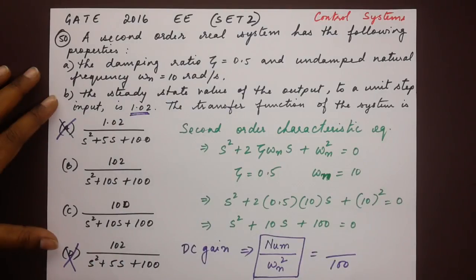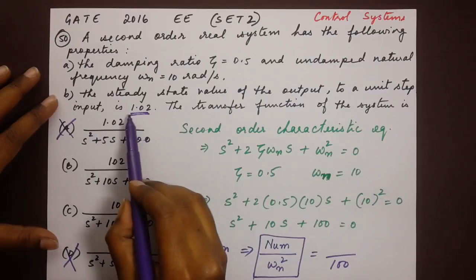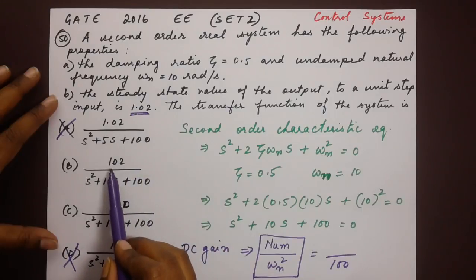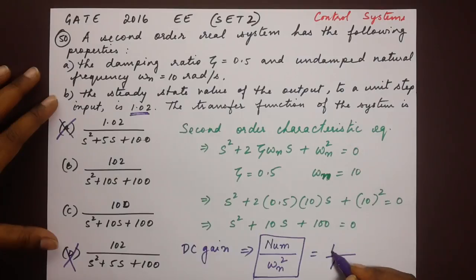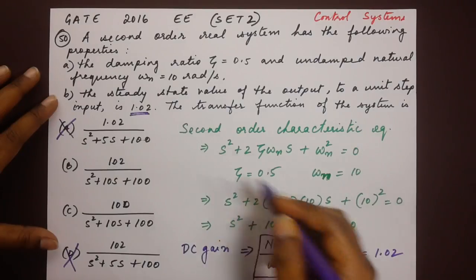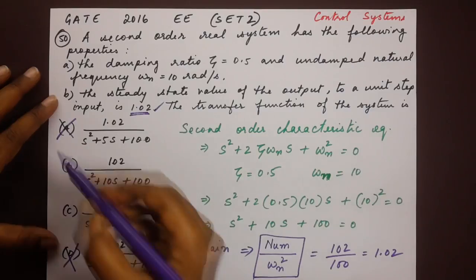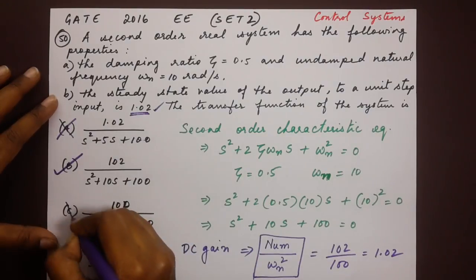We have to check which one of these two will give us the value of 1.02 as the steady state value. Let us start with B first, 102. If we place 102 here, we get the value of 1.02. It matches. If we place 100 here, 100 by 100 which is 1, it doesn't match. That's not the DC gain. That tells us that option B is the right answer.